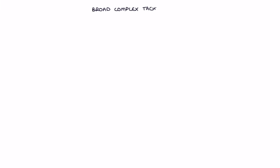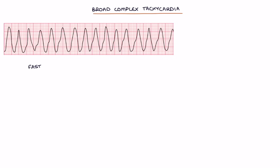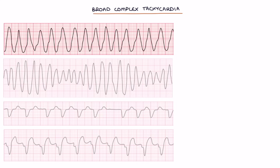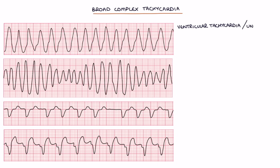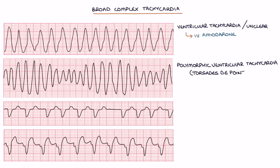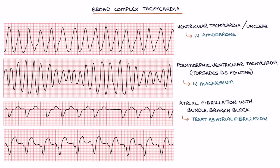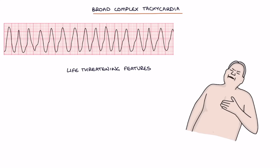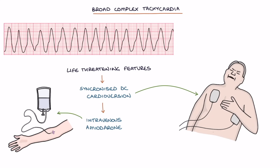Broad complex tachycardia refers to a fast heart rate with a QRS complex duration of more than 0.12 seconds, or three small squares on an ECG. The resuscitation guidelines break this into four groups: ventricular tachycardia or unknown cause, treated with IV amiodarone; polymorphic ventricular tachycardia such as torsade de pointes, treated with IV magnesium; atrial fibrillation with bundle branch block, treated as atrial fibrillation; and supraventricular tachycardia with bundle branch block, treated as SVT. Patients with life-threatening features should receive synchronized DC cardioversion, with IV amiodarone added if shocks are unsuccessful.